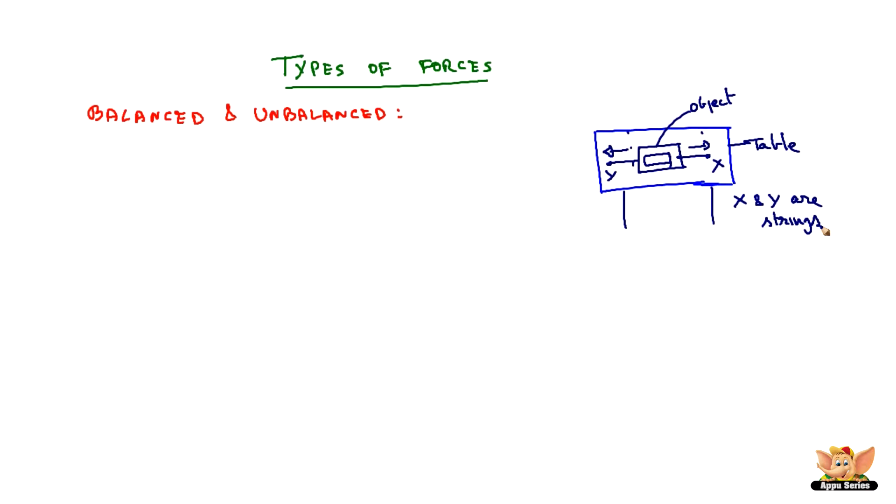See the effect of this. Now X is generating a force of F1 on the object, whereas Y generates a force of F2 on the object. Now F1 and F2 are acting in opposite directions.